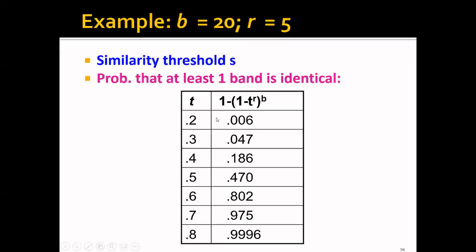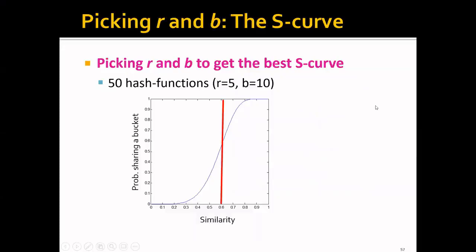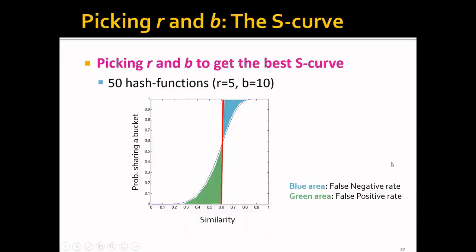Let's look at an example with B equals 20 and R equals 5. The probability that at least one band is identical for different values of T produces a steep S-shaped curve — steep in the middle and flat at both ends. We can pick different R and B to get the best S shape. With 50 hash functions, R equals 5 and B equals 10, we get an S-curve where the green area represents the false positive rate and the blue area represents the false negative rate.